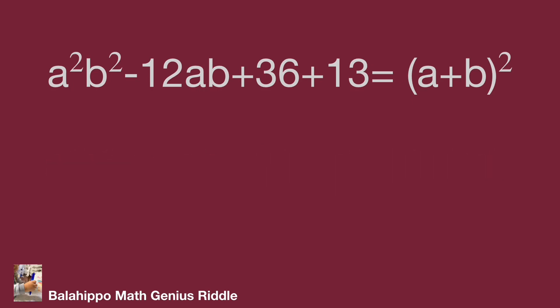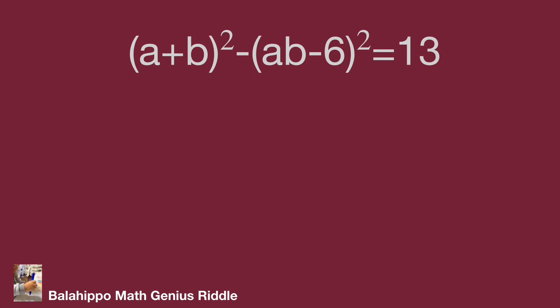Distribute 49 to 36 and 13 in the left side of the equation. Generate another square as (ab - 6)² + 13 = (a + b)². Move (ab - 6)² to the other side. Then we have (a + b)² - (ab - 6)² = 13.